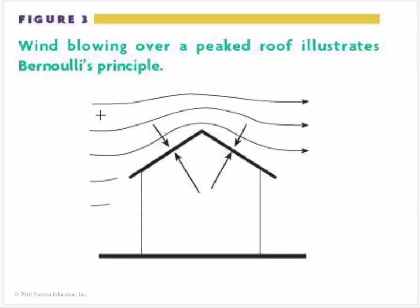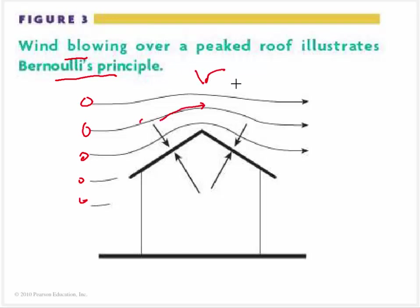Another example of Bernoulli's principle is wind blowing over the peak of a roof. Think about chunks of air blowing over the roof — right at the peak it's going to be relatively fast, so the speed goes up and pressure goes down. Inside the house the pressure is relatively higher. This pressure difference can actually blow the roof off the house if the wind is strong enough.